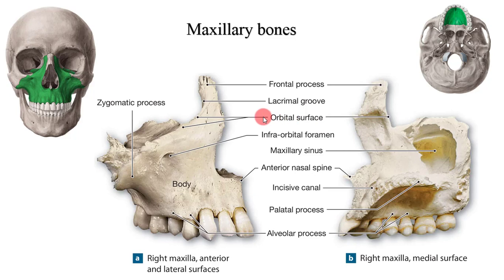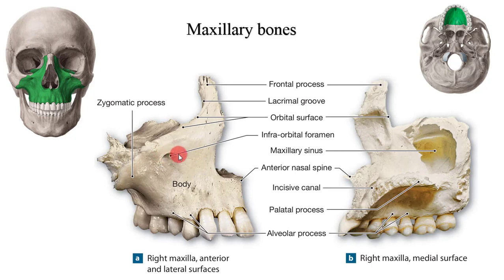The body of the maxilla contributes to the anterior margin and the floor of the bony orbits and the anterior wall of the nasal cavity. Lateral to the nasal cavity, each maxilla contains a large air-filled cavity called the maxillary sinus, which extends from the orbital ridge to the alveolar process. The infraorbital foramen is located underneath the orbital ridge and serves as a pathway for the infraorbital nerve and vessels, extending along the infraorbital groove within the orbit.